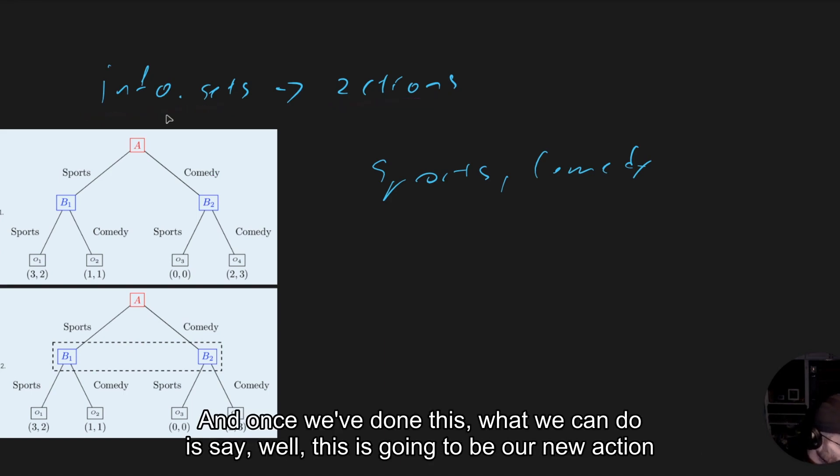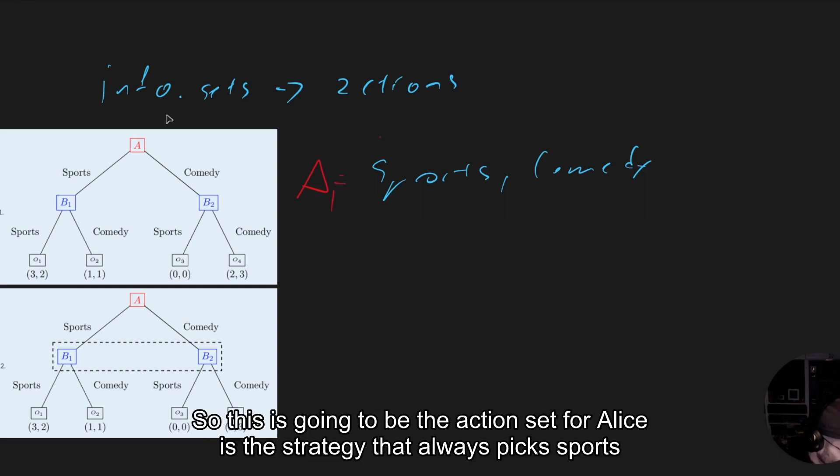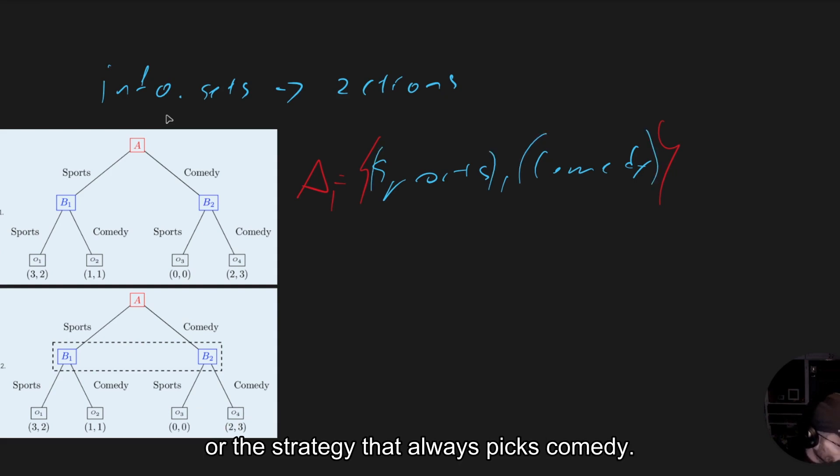Once we've done this, what we can do is say this is going to be our new action set. So this is going to be the action set for Alice, is the strategy that always picks sports or the strategy that always picks comedy.